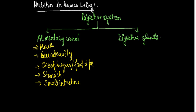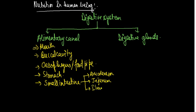The food then goes into the stomach, and then the small intestine. The small intestine has three parts: the first part is called the duodenum, the second part is called the jejunum, and the last part is called the ileum. So these are the three parts into which the small intestine is divided.